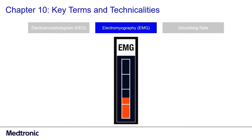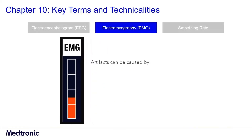Electromyography, EMG. Motor neurons transmit electrical signals that cause muscles to contract. An EMG uses electrodes to translate these signals into graphs, sounds, or numerical values. The BIS monitoring system detects higher than normal frequency in EMGs and depicts this as high-frequency artifacts.